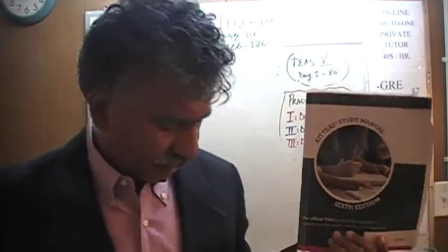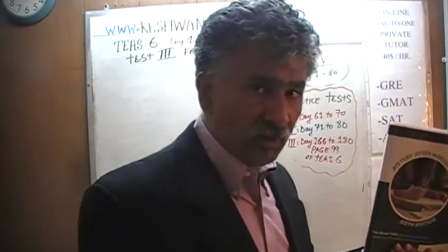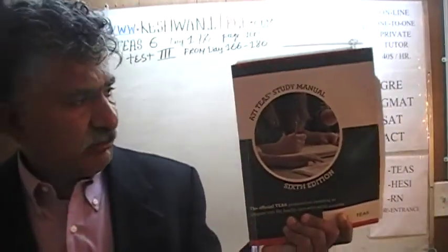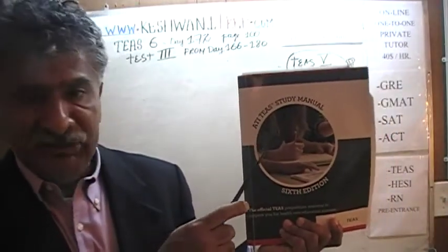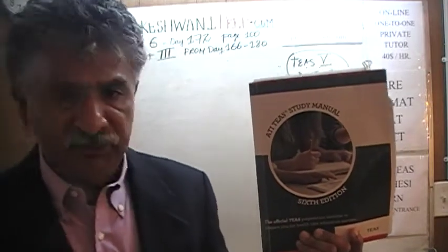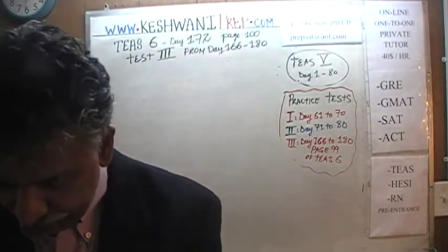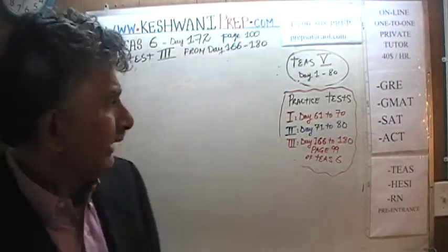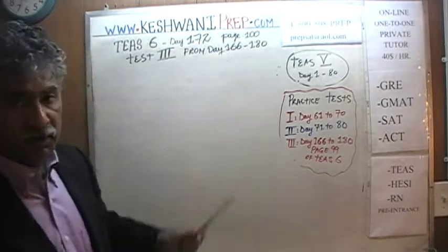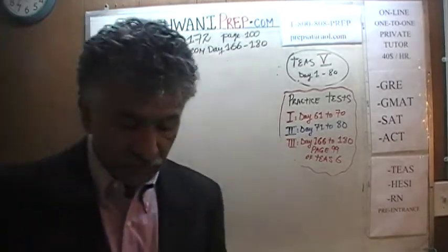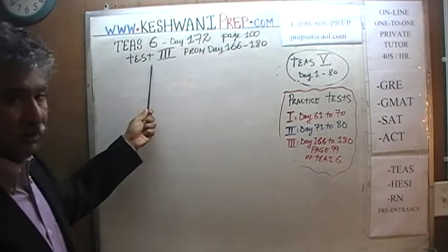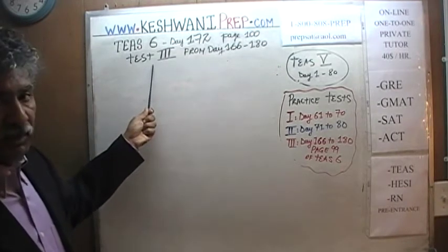We are here because we want to prepare for the TEAS. We have been solving math problems out of this book, the ATI TEAS study manual, the 6th edition. If you do not own this book already, purchase it immediately — you are going to need it. Today is our lesson number 172 and we are on page number 100. We are solving problems through the third test, beginning on page number 99.